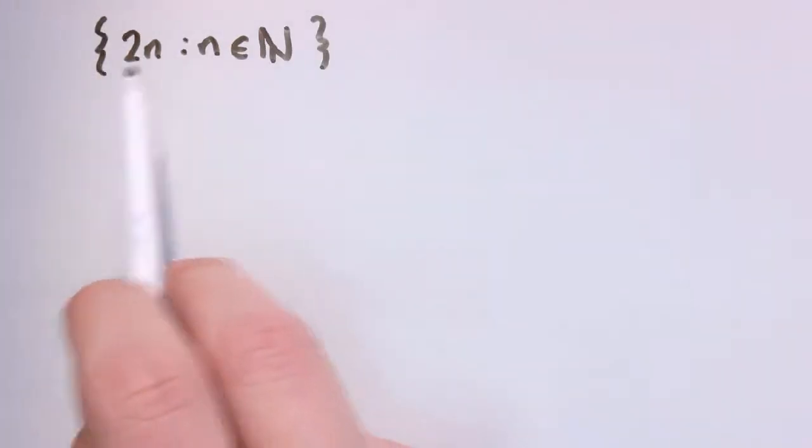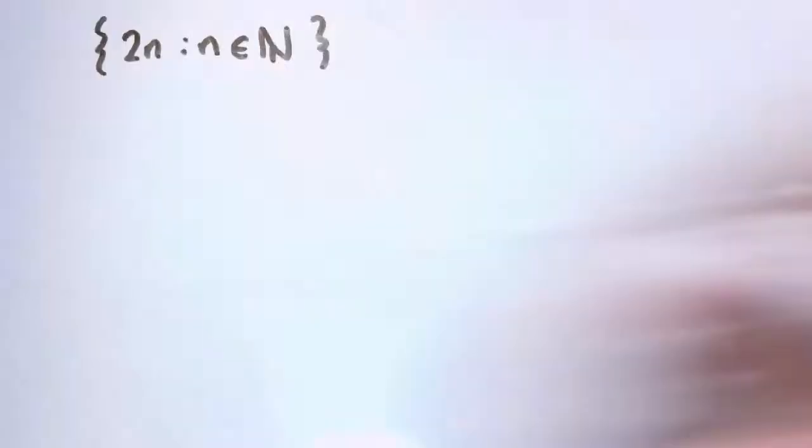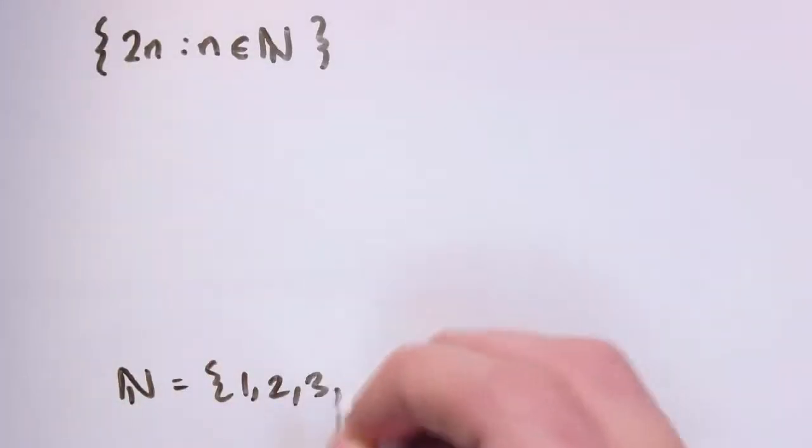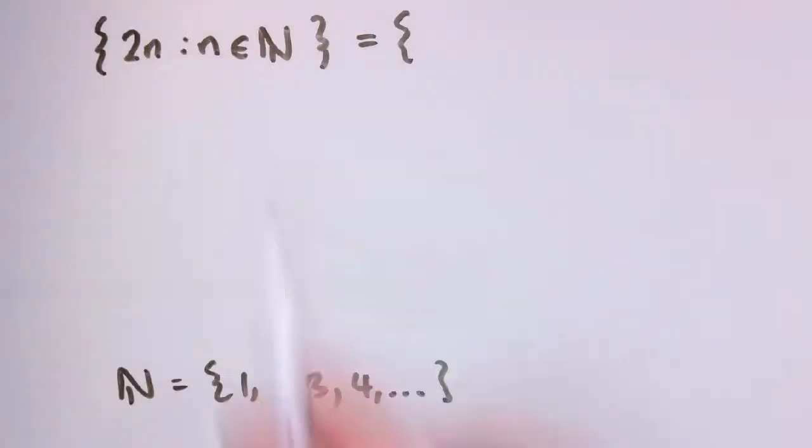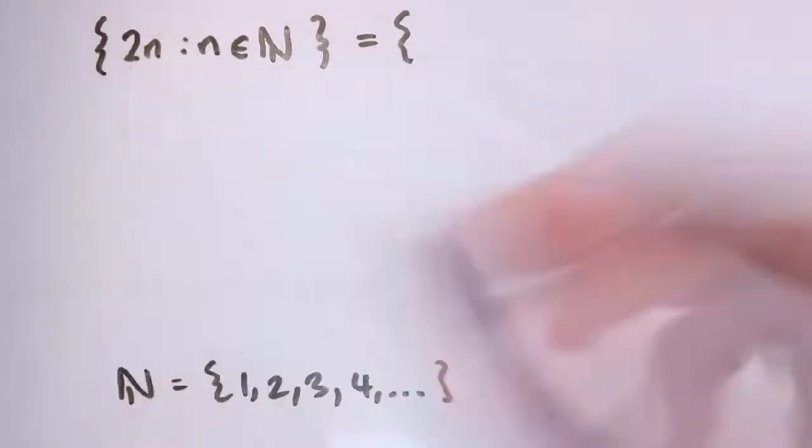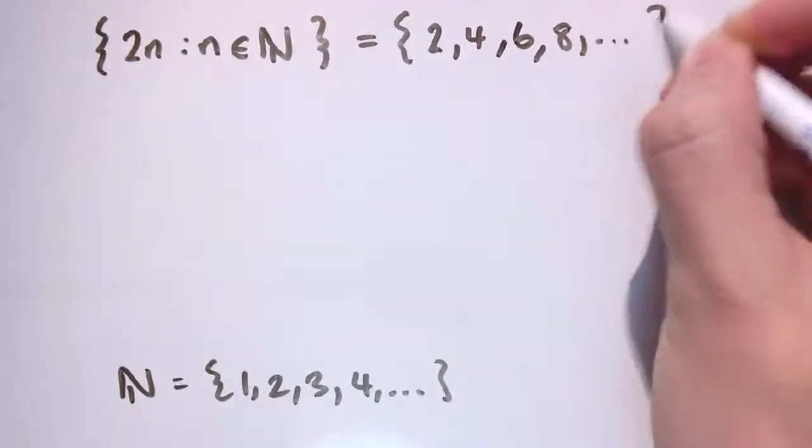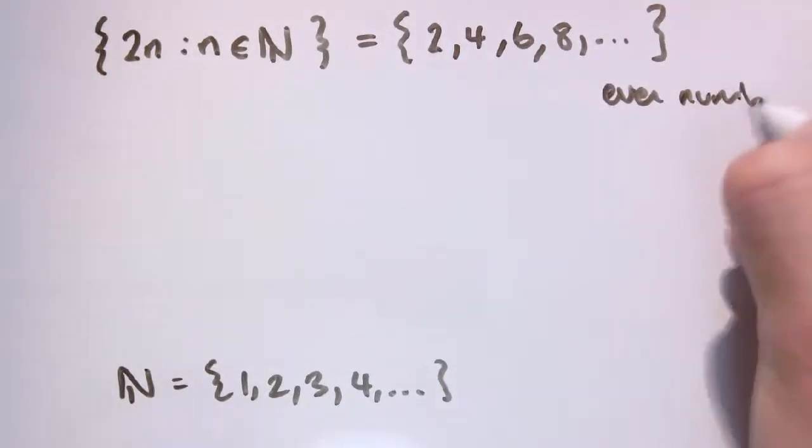Now what it contains is two times N for every N which belongs to the set capital N for the set of natural numbers. So remember that set capital N I just defined as the counting numbers one, two, three, four, etc. So this one is two times N for everything that's in here. So if I take a number in here like one I do two times it and I get two. Two times two is four. Two times three is six. So this is actually a way of describing all of the even numbers.